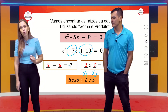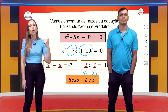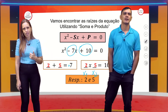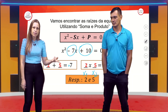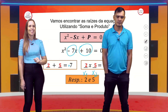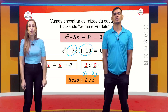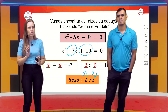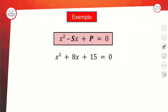Soma e produto é um recurso para resolver uma equação do segundo grau completa de maneira mais rápida. Pensa no x1 e x2: dois valores que somando dão tal e multiplicando dão tum. Vai pelo multiplicando e acha tudo. Vamos fazer mais um exemplo de soma e produto.